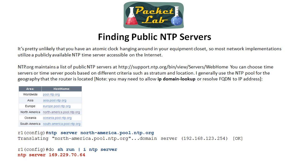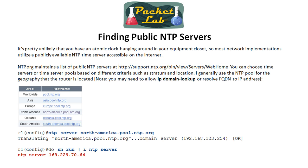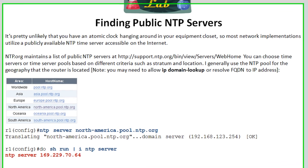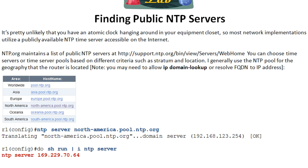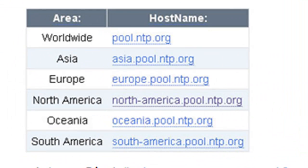If you want to use a public NTP server, bookmark NTP.org. From there it gives you all kinds of open-access public NTP servers. You can search by stratum level — they show stratum 2 and stratum 3 — and find them by geography, which is what I usually do. If my router is in Asia I use the Asia pool; if it's in North America I use that pool.